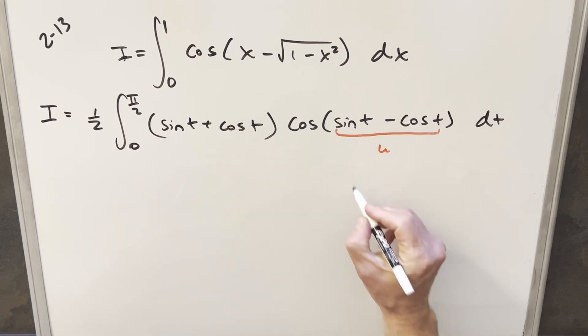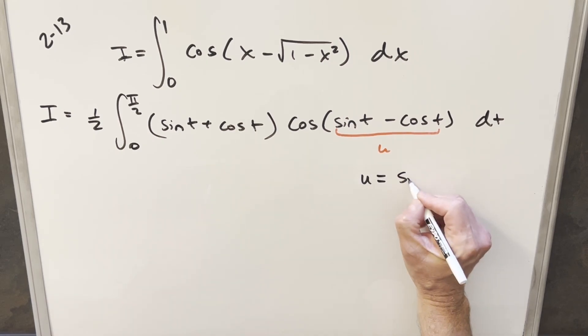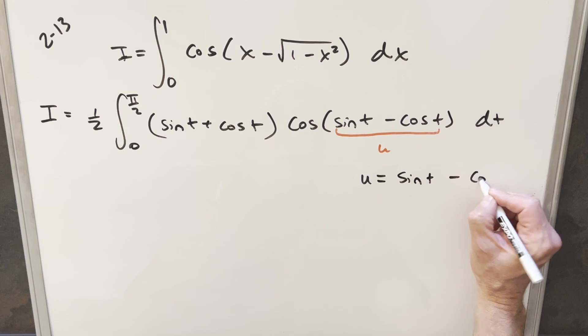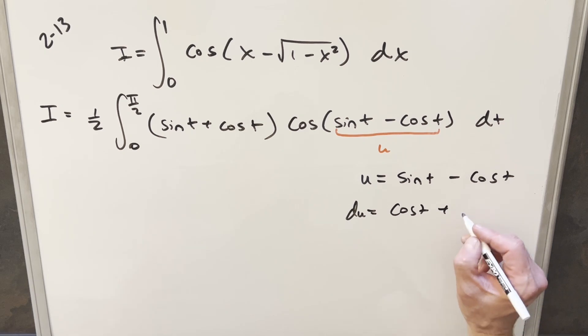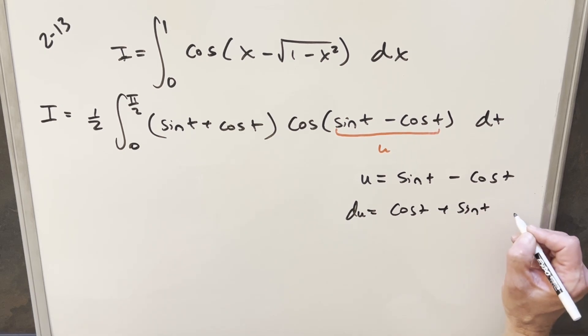So my u value is going to be sine t minus cosine t. We'll take a derivative, so du, this is going to become cosine t. The derivative here, the minus in front is going to be a plus sine t dt.